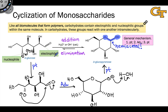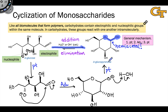This reaches equilibrium very quickly when, for example, we dissolve a monosaccharide in water. And as we can see from the equilibrium arrows, this tends to favor the product side significantly. This equilibrium is often greater than 99 to 1 in favor of the cyclic form, and so you often see monosaccharides drawn in this form.